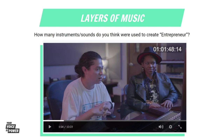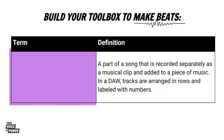Before we move on, please write down today's key term — track — into your notebook. A track is a part of a song that is recorded separately as a musical clip and added to a piece of music. In a DAW, or your digital audio workspace, tracks are arranged in rows and labeled with numbers.